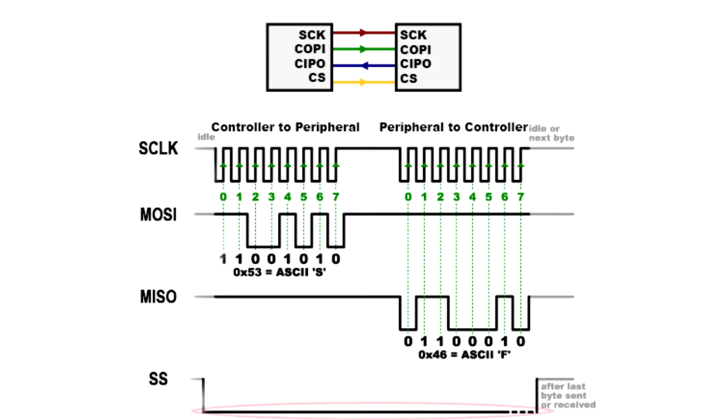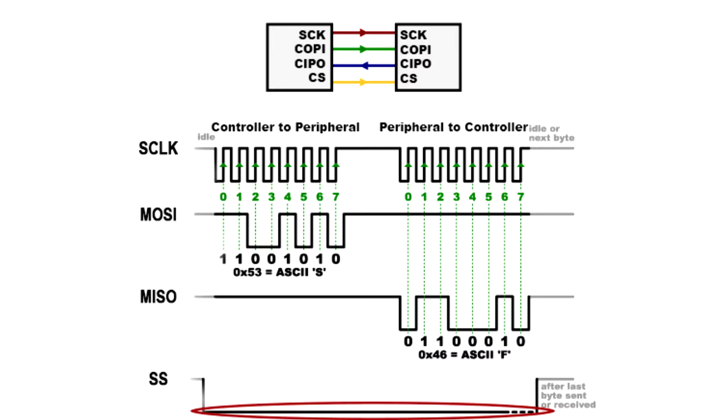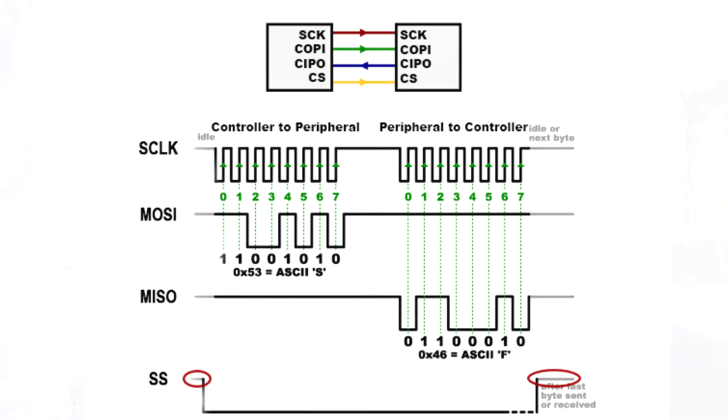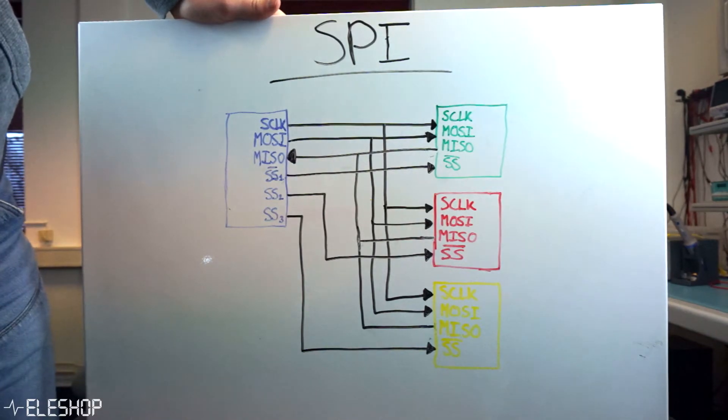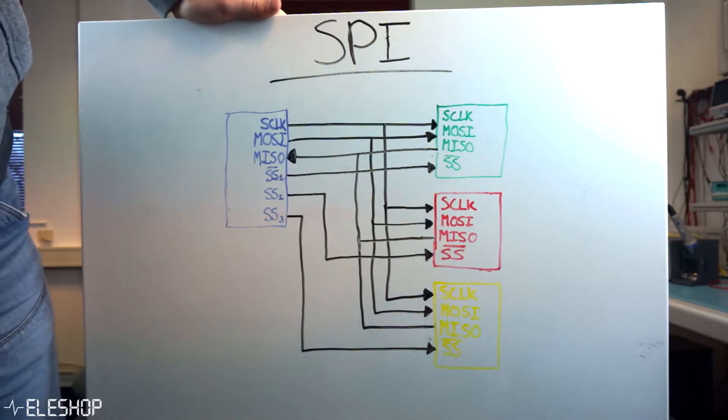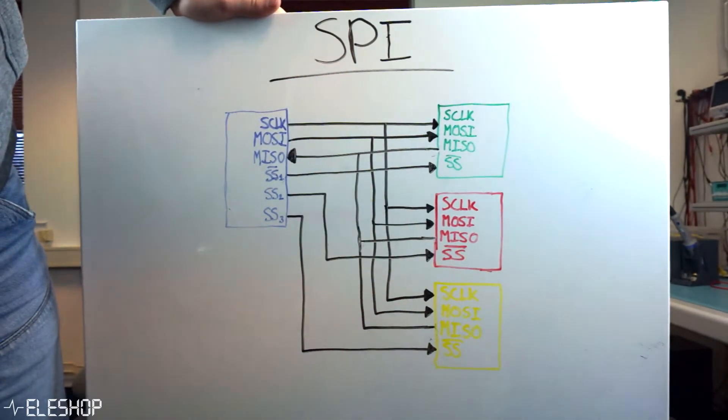When the SS line is low, communication is happening between master and slave. When the SS line is high, no communication is happening between the two. Theoretically, the SPI can have an unlimited number of slaves.